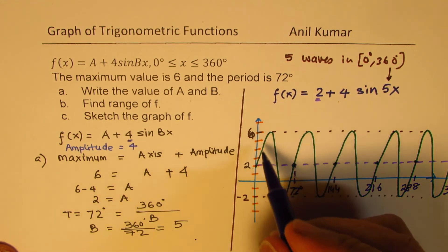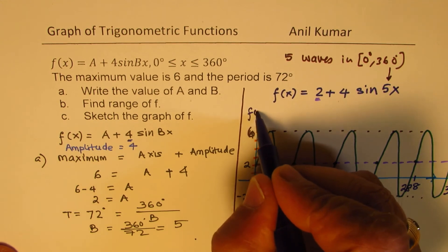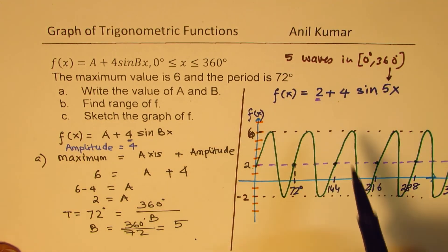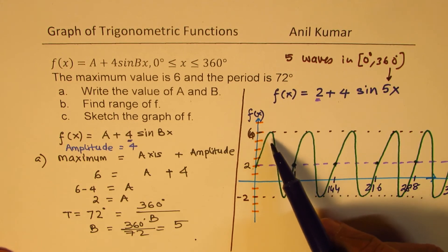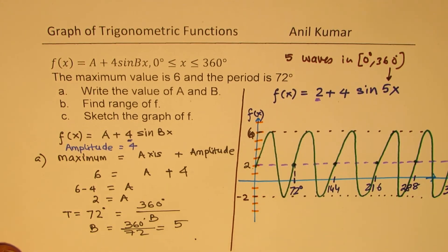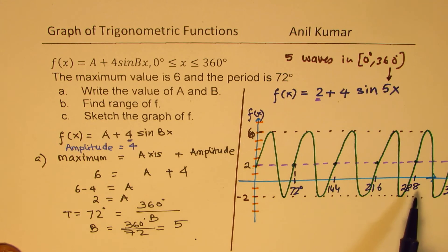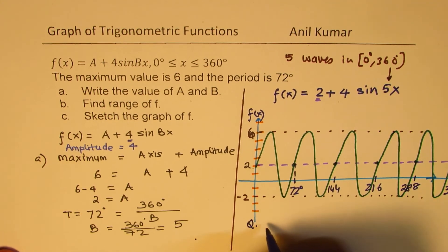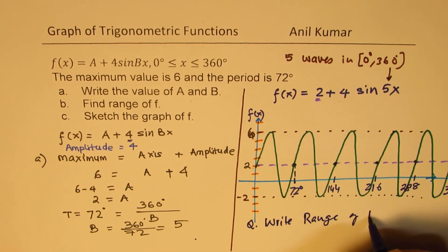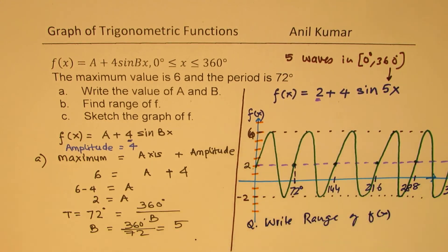So, those are your time periods. And on the vertical axis, we have the value, maximum being 6, minimum being minus 2. Is that clear to you? So, that is how we could sketch our function. So, I hope the steps are absolutely clear.